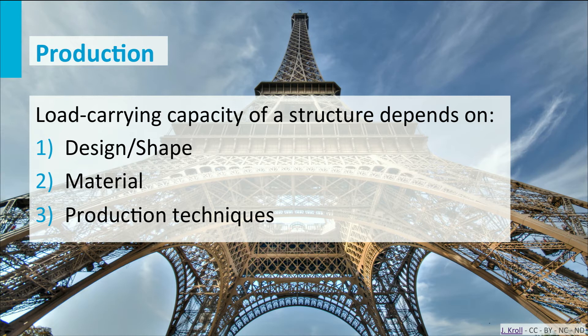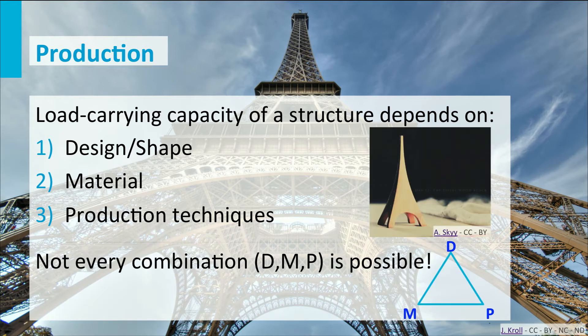for example wood or concrete. You would probably sense that this would be inappropriate. If you change the material, you also need to change the shape and the way you manufacture the shape. That is why you should use a triangle, as in this slide, and realize that some combinations are possible but others are not.